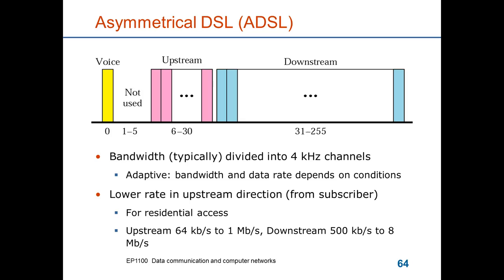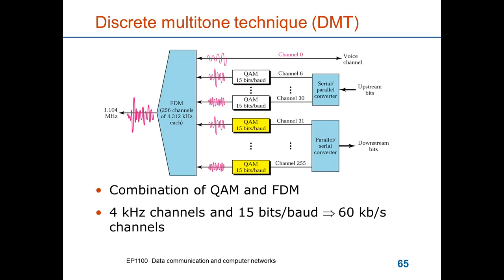This shows how it's accomplished. There's a voice channel, which is just transparent. And then there's a serial to parallel converter here. So the data is sent in parallel over the different channels. And then there's an advanced modulation, quadrature amplitude modulation, which has 15 bits per baud for each channel. And you see the same modulation being used for the downstream channels. So each channel being 4 kHz, and there's 15 bits per baud. It means that you can carry 60 kbps per channel.